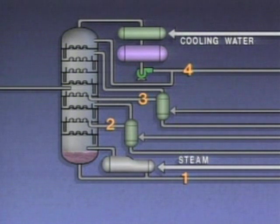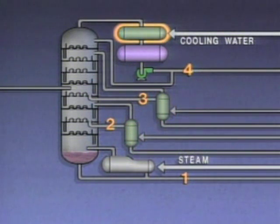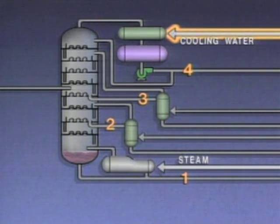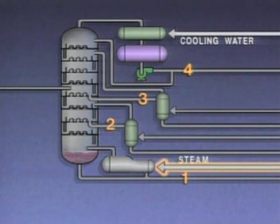We'll number the products one through four to identify them. The illustration also shows two devices called strippers or side-stream strippers, a condenser, a receiver, and a reboiler. Cooling water reaches the condenser through this line. Steam reaches the strippers through these two lines, and steam reaches the reboiler through this line.